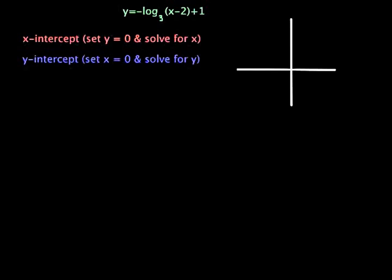So to find an x-intercept, as we can see here, we're going to set the y equal to 0 and solve for x. So first off, we say 0 is equal to negative log base 3 of x minus 2 plus 1.